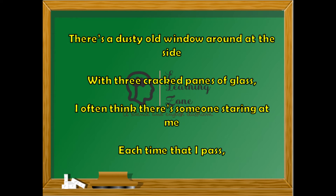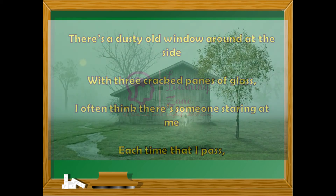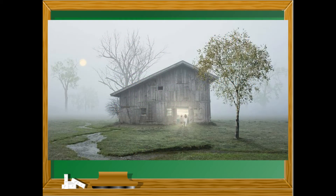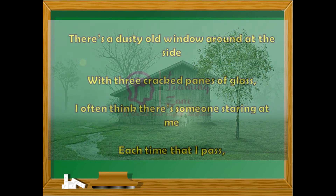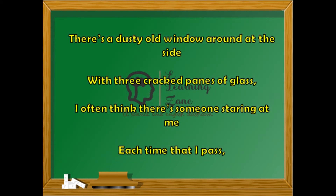'There's a dusty old window around at the side, with three cracked panes of glass. I often think there's someone staring at me each time I pass.' The window is dusty and old because no one has been using the shed for long. No one has bothered to clean it or repair the broken glass. Every time the child passes by, he feels that someone is sitting inside staring at him. The child is quite scared of the presence of the shed.